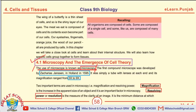Another short question which can be selected is magnification and resolution or resolving power. The question may be asked as: define magnification, or define resolving power, or differentiate between magnification and resolution. Magnification is the increase in the apparent size of an object, and it is an important factor in microscopy. While the resolving power or resolution is the measure of clarity of an image.